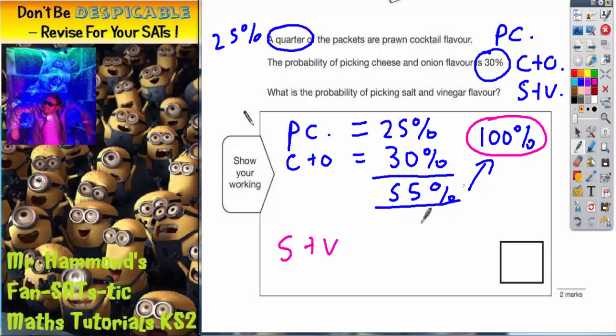Salt and vinegar, to get from 55 up to 100: if you add on 5 you'll get to 60%, and then you'll need another 40 to get from 60% up to 100%, so it's going to be 45%.